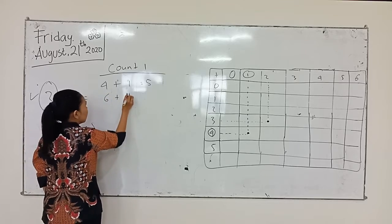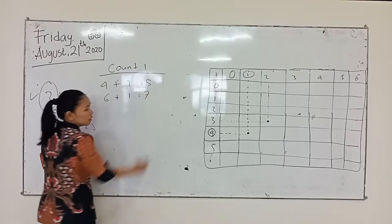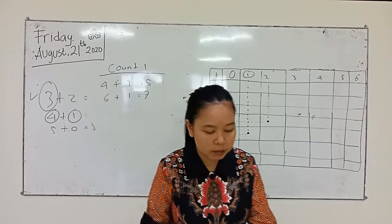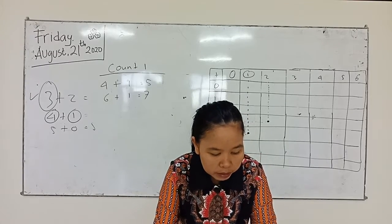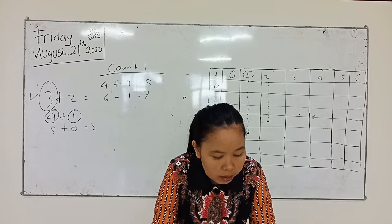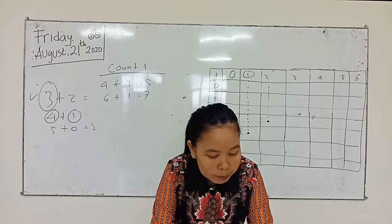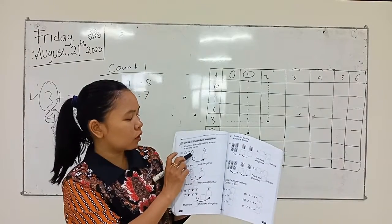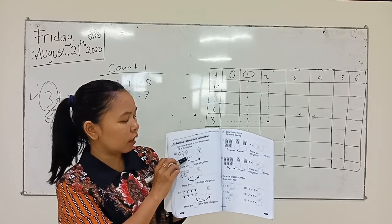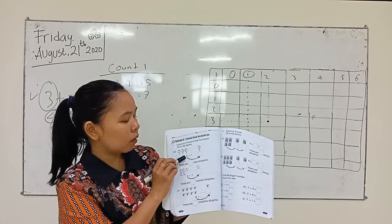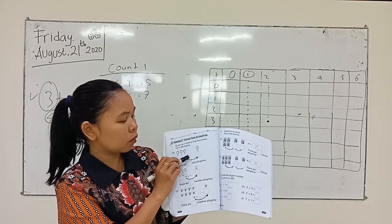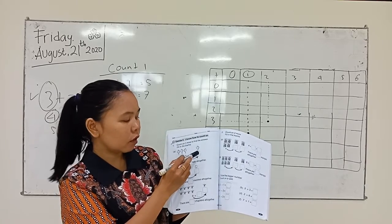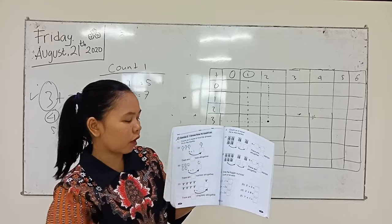Six plus one is seven, like that. Number 8 — fill in the blank. Lampionnya ada berapa? We count: 1, 2, 3. We write 3 here. Then add 1: 3 plus 1 — here we write 4.